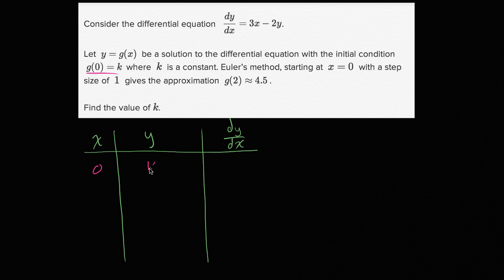So what's our derivative going to be at that point? Well, dy/dx equals 3x minus 2y. So in this case, it's 3 times 0 minus 2 times k, which is just equal to -2k.